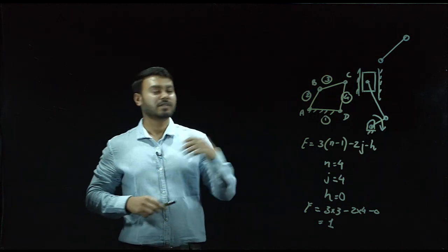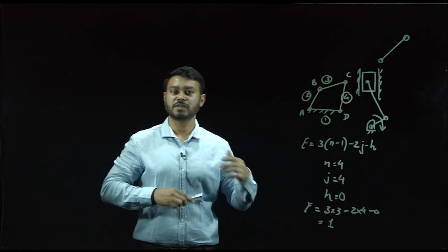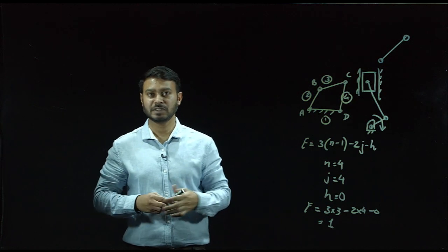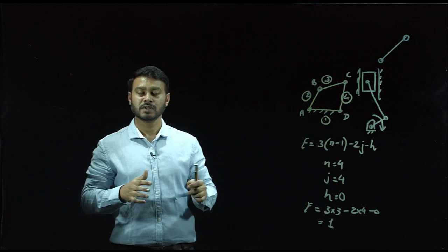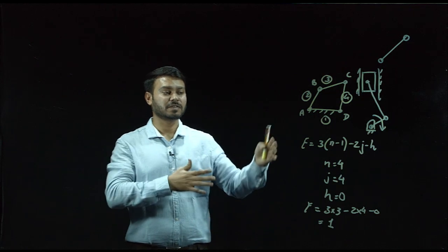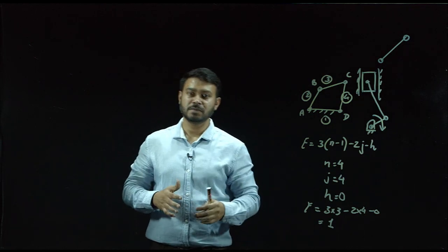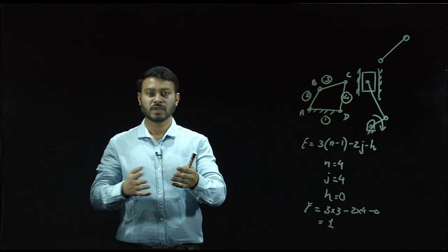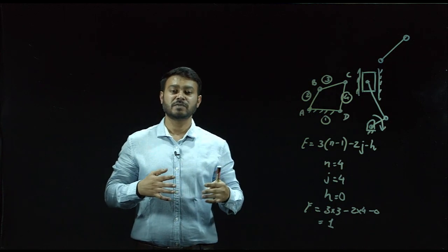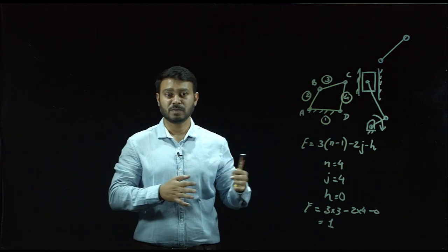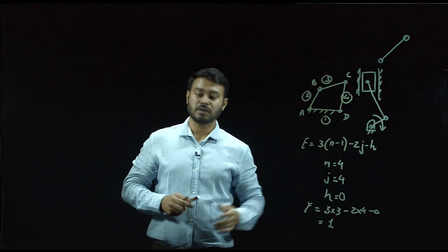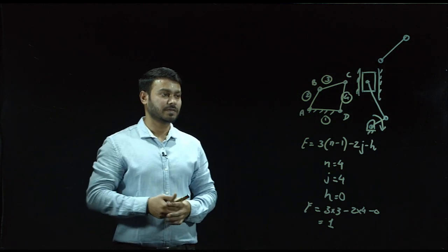There are many mechanisms where we find the degree of freedom. Some mechanisms contain a higher pair, such as line or point contact, as already discussed for the cam and follower mechanism, where the value of h comes into existence.